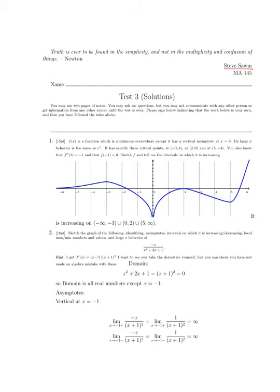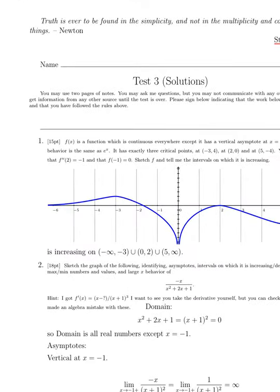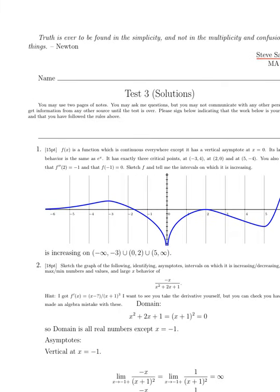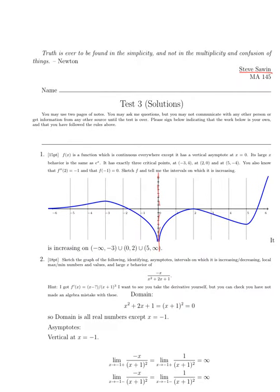Here's what we know. We know that f(x) is a function which is continuous everywhere except it has a vertical asymptote at x equals zero. Then we know that its large x behavior is the same as e to the x. So it's going to increase without bound when x is large and approach a horizontal asymptote of y equals zero as x goes to minus infinity.